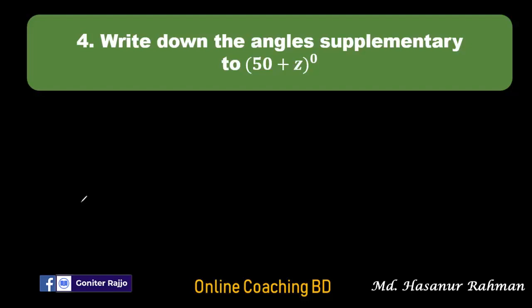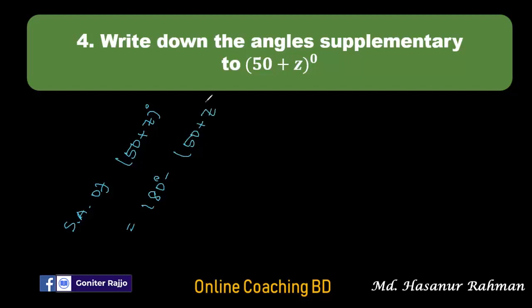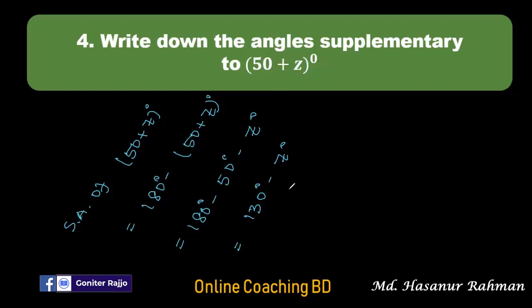Now number four says write down the angle supplementary to (50 + z) degrees. From the definition of supplementary angle, if the summation of two angles is 180 degrees then one angle is supplementary to another. So supplementary angle of (50 + z) degrees equals 180 degrees minus 50 degrees minus z degrees, which gives 130 degrees minus z degrees.